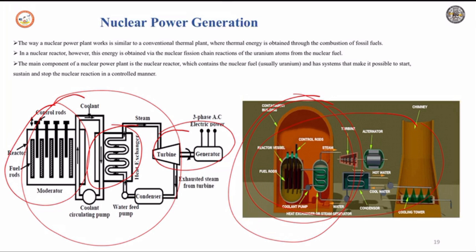To ensure a sustainable chain reaction, a moderator and control rods are used to control the reaction. Moderators such as heavy water or very pure carbon are used to reduce the speed of the neutrons. To control the number of neutrons, control rods made of cadmium or boron steel are inserted inside the reactor.